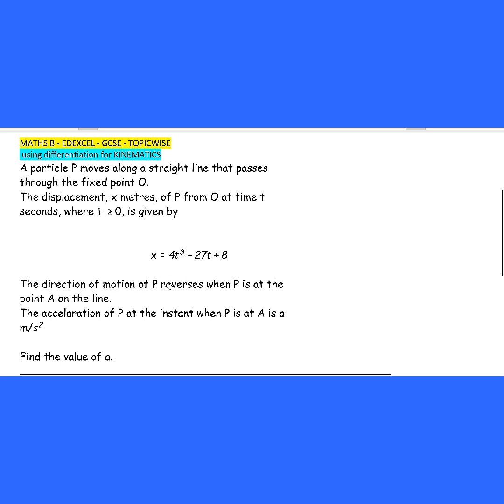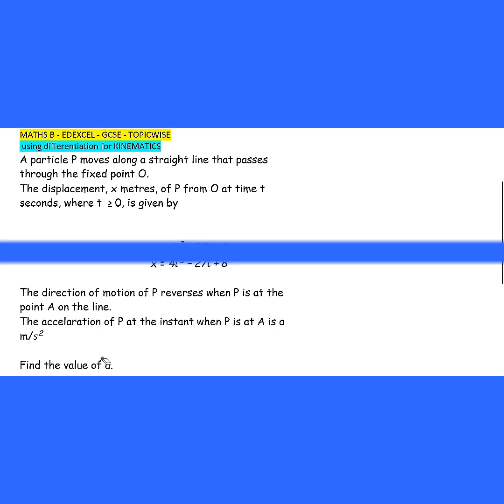The direction of motion of P reverses when P is at the point A on the line. The acceleration of P at the instant when P is at A is a m/s². Find the value of a.